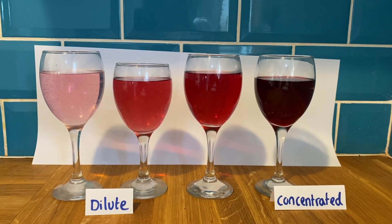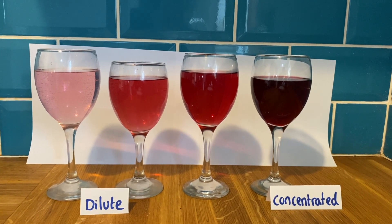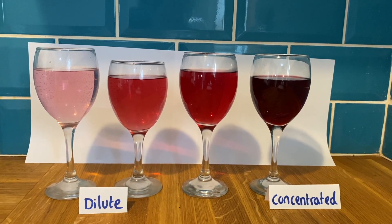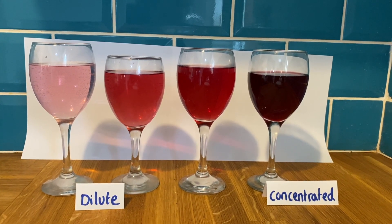Something that's concentrated has not had very much water added to it, and something that's diluted has had lots of water added to it. A concentrated reactant will react with a faster rate than a dilute reactant.